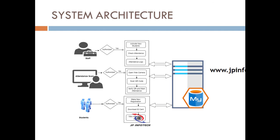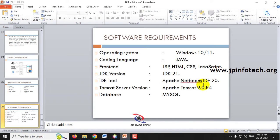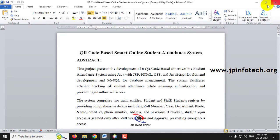In the system architecture, there are two entities: staff and students. Staff have authority to activate new students, check attendance, and view attendance logs. Students can register, download their identity card, and mark attendance. All data is stored in a MySQL database. These are the hardware and software requirements.